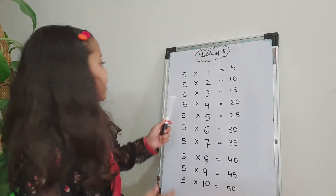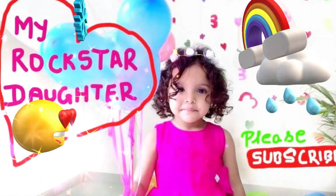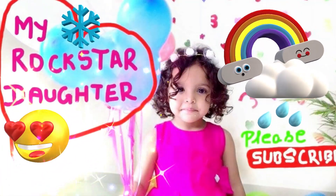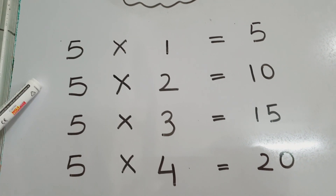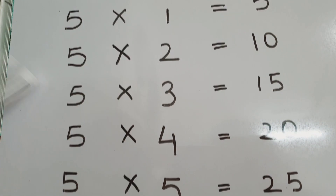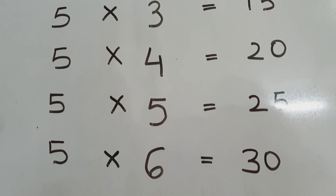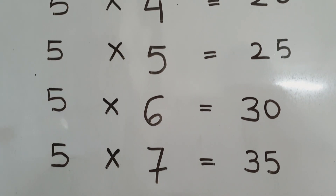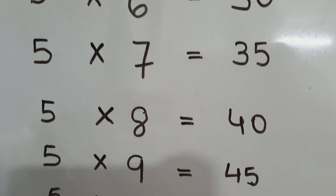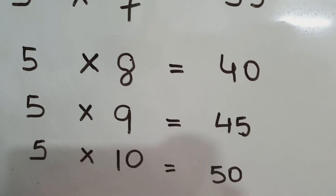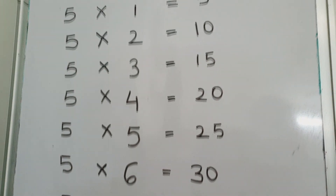Hi friends, welcome to my rockstar. 5 ones are 5, 5 twos are 10, 5 threes are 15, 5 fours are 20, 5 fives are 25, 5 sixes are 30, 5 sevens are 35, 5 eights are 40, 5 nines are 45, 5 tens are 50. Very good, we learned the table of five!